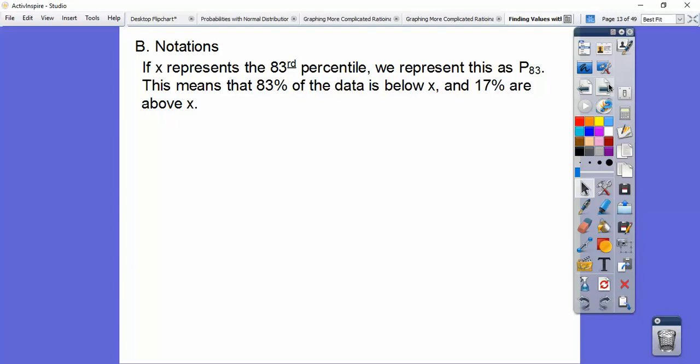So if x represents, and this is just some notations that we've got to cover, if x represents the 83rd percentile, we represent that as P sub 83. And that just means that 83% of the data is below x, and the other rest of the 100%, which is 17%, is above x.